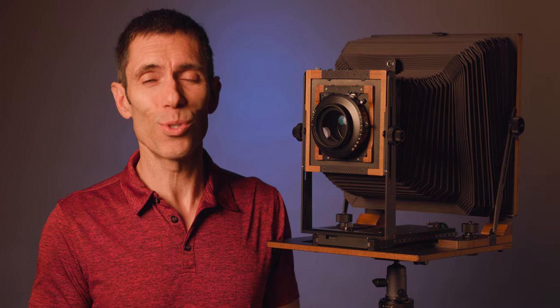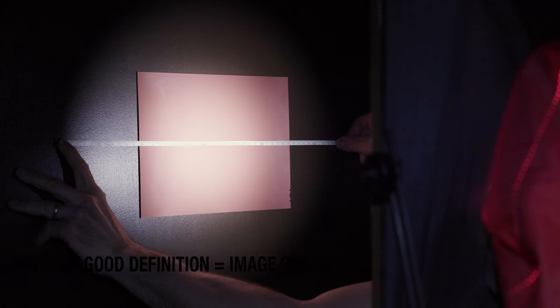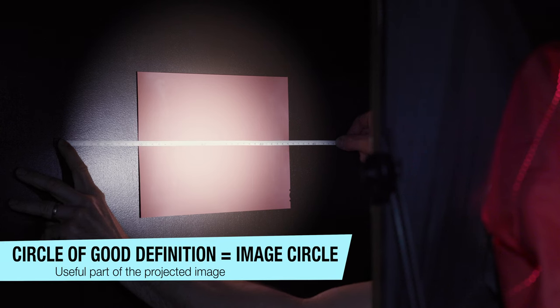If you've watched my other lens reviews, you know I take my puns seriously. More importantly is the diameter of the cone of light projected onto the film. That diameter is what is referred to as the circle of good definition, or more simply put, the image circle.